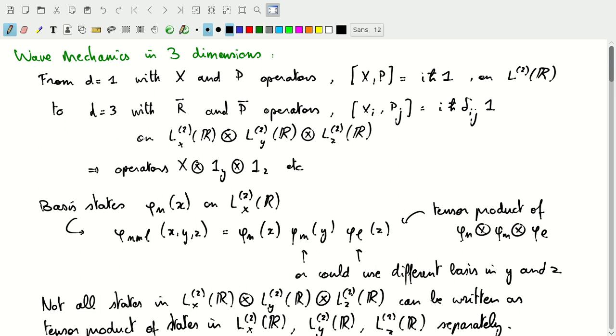This is a tensor product of φ_n, φ_m, and φ_l. Not every state that is part of our tensor product Hilbert space can be written as a tensor product in its own, but this basis will allow us to describe all of the Hilbert space states in our tensor product space. We could of course also have used a different basis in X, Y, and Z, or we could have used an r, θ, φ description as well.